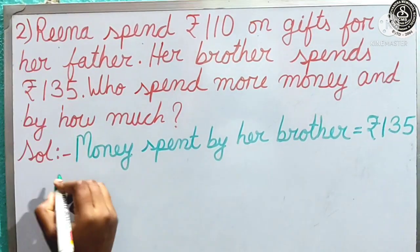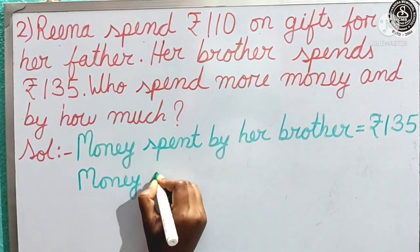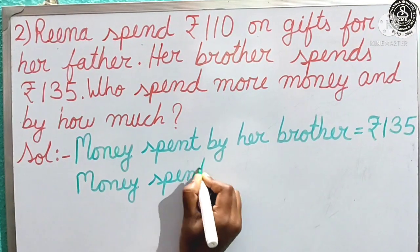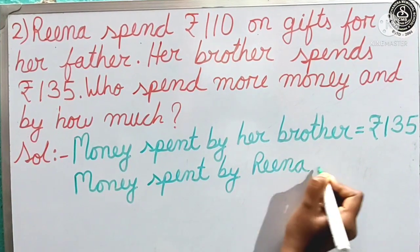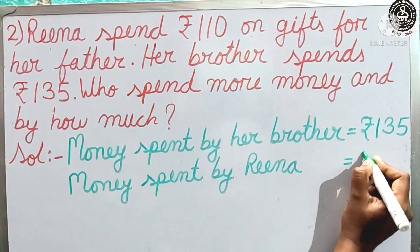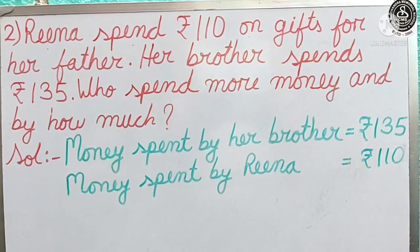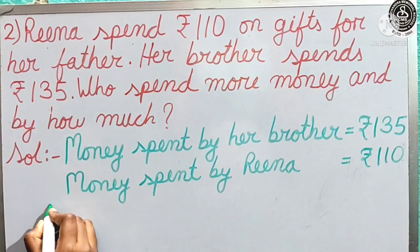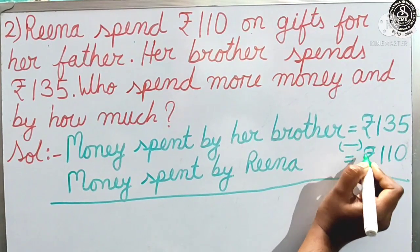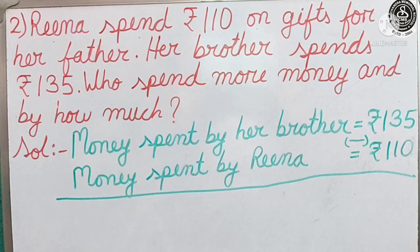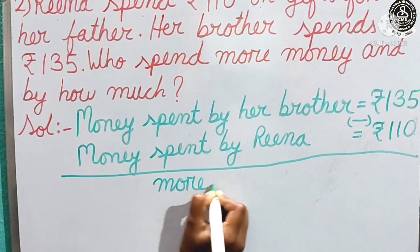Now, money spent by Reena — it is a name so we write it with a capital letter — equal to, give the rupee sign, and Reena spent 110 rupees. For finding who spent more money, we have to do the subtraction, so we give the subtraction sign. And now we are going to find the more money, so we write here: more money.